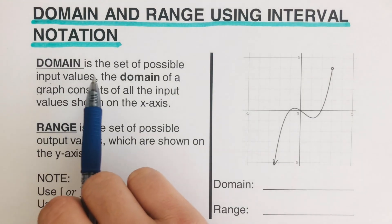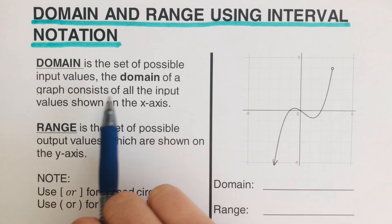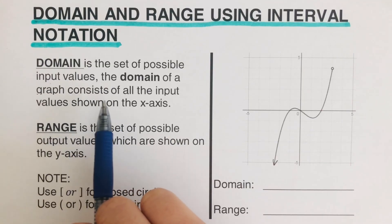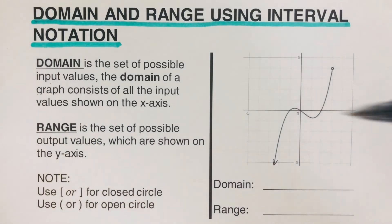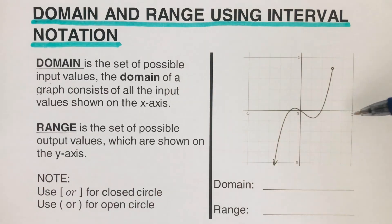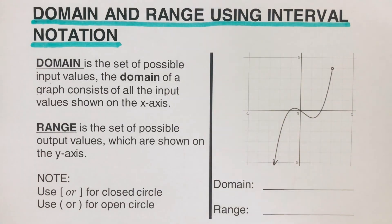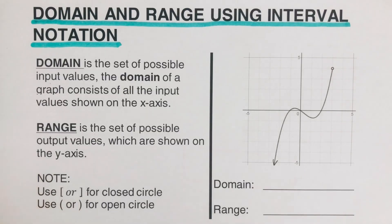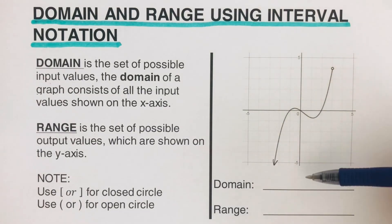Domain is the set of possible input values. The domain of a graph consists of all input values shown on the x-axis, so domain refers to the values on the x-axis. Range is the set of possible output values, which are shown on the y-axis.